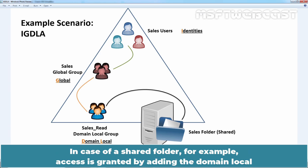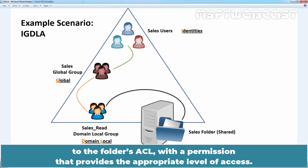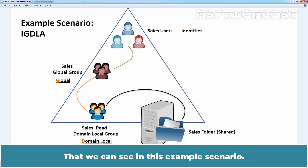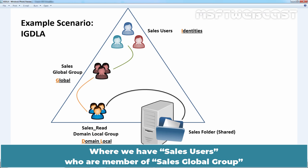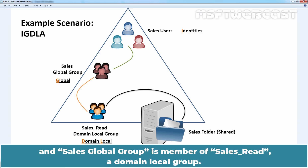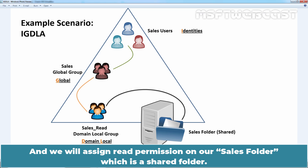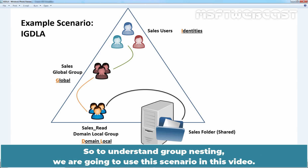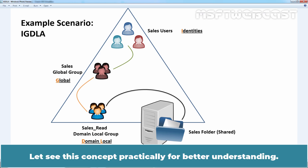These role groups are granted access to resources. In the case of a shared folder, access is granted by adding the domain local group to the folder's ACL with a permission that provides the appropriate level of access. We can see this in an example scenario where cells users are members of the cells global group, and cells global group is a member of the cells read domain local group. We will assign read permission on our cells folder, which is our shared folder. We are going to use this scenario in this video.